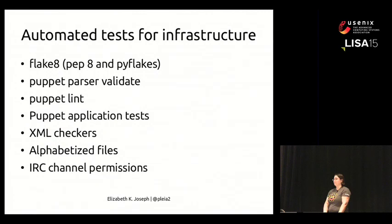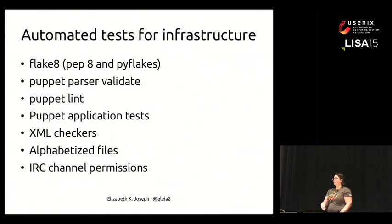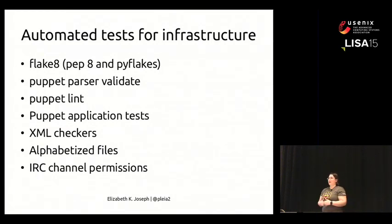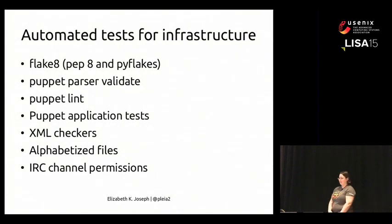We started using Beaker RSpec to do actual testing of the Puppet configs on a VM. So tests now make sure the Puppet not only looks syntactically clean and probably will work, but we actually test to make sure it does work. We also validate the syntax of our XML files — if a developer adds their project to our infrastructure and breaks the XML, which would break our entire infrastructure, we can now detect that through automated tests. We also make computers ensure that files are alphabetized, because humans are really bad at the alphabet.